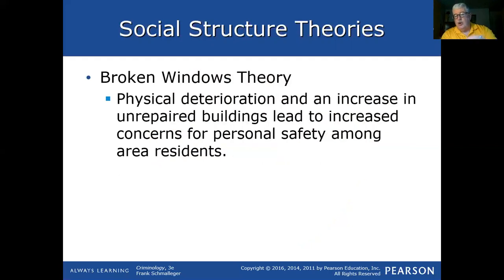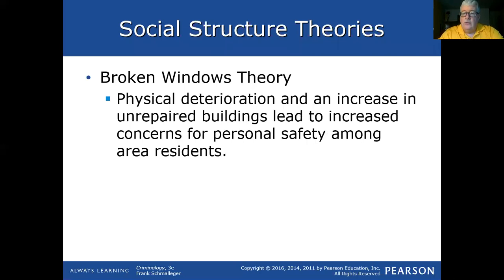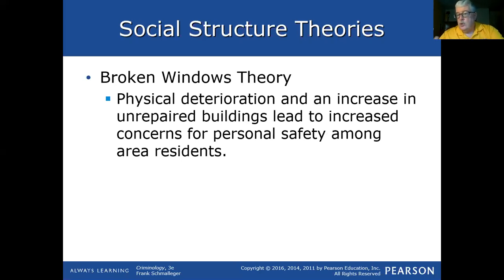Broken windows theory — you may have heard of this before — is based on an article in the Atlantic Monthly from 1982, which suggested that physical deterioration and unrepaired buildings led to increased concerns for personal safety among area residents. It also suggested that areas that are more run-down are more likely to have crime: people don't care about the property, they're not maintaining it, and people walking or driving through sense that and are more likely to vandalize or commit crimes. This was the basis for so-called broken windows policing.